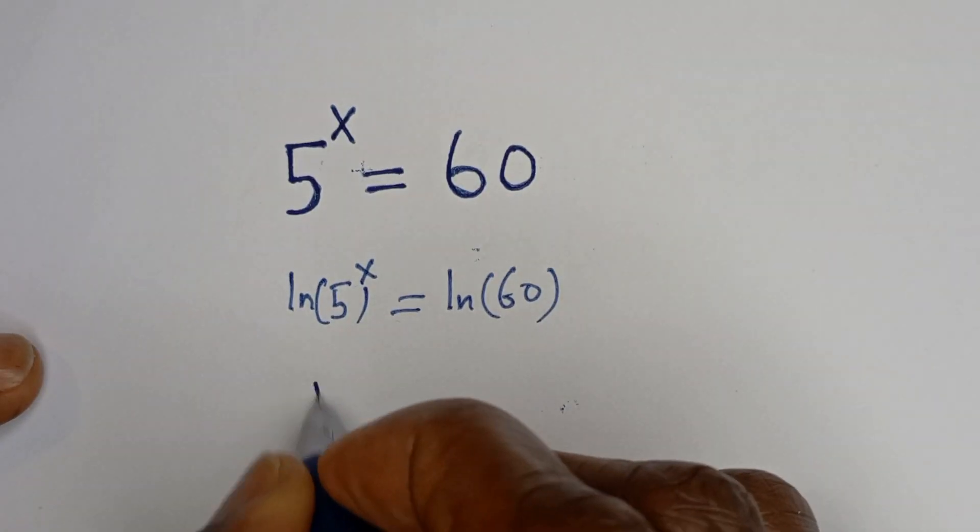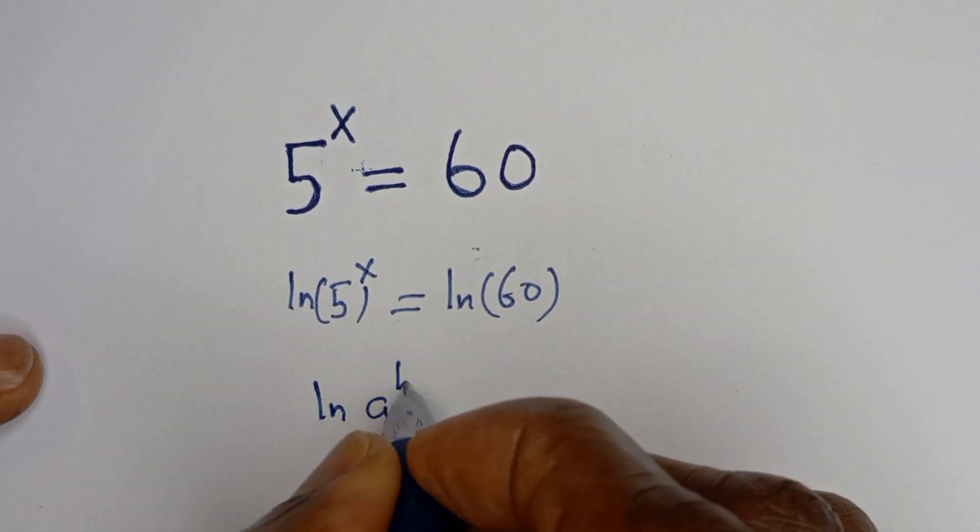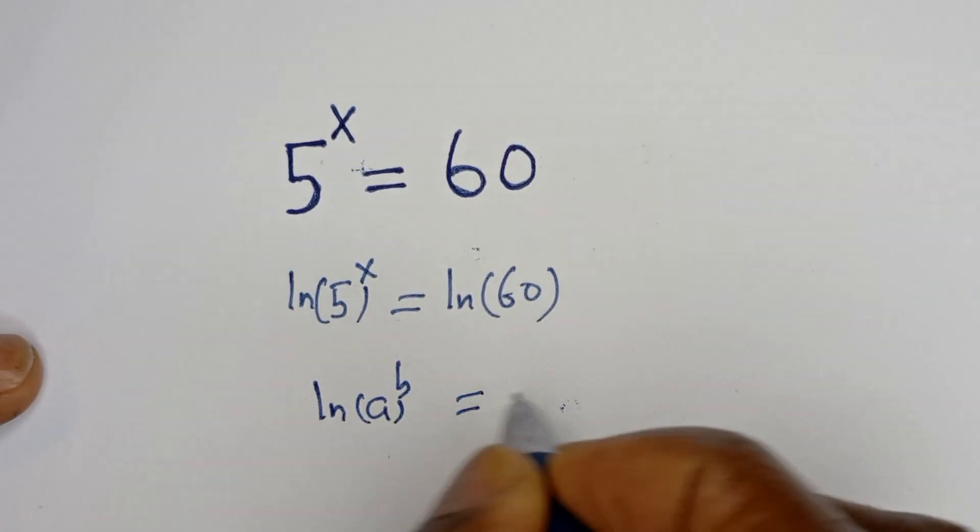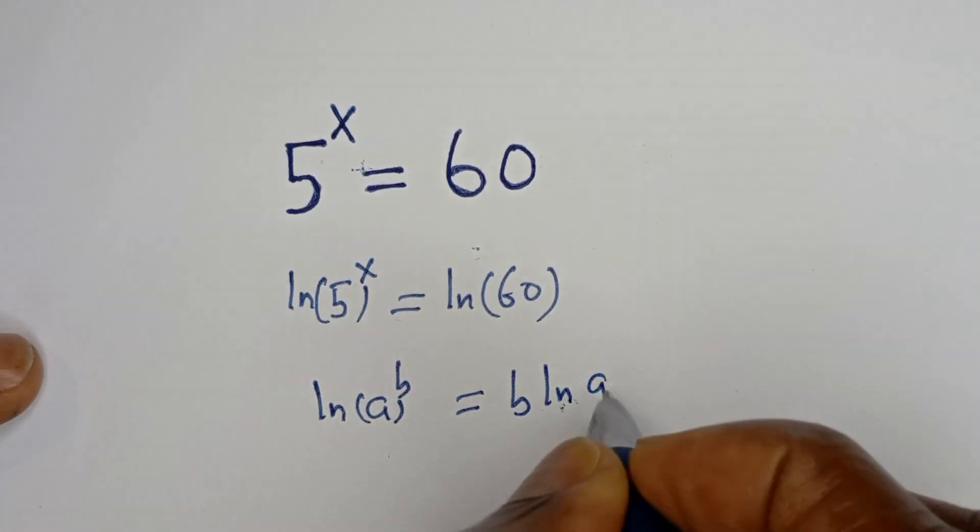Then if you have ln of a to the power of b, this is equal to b ln of a.